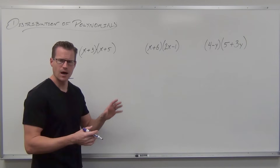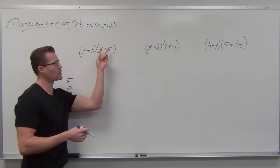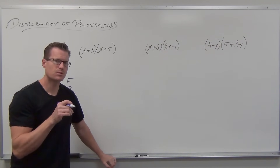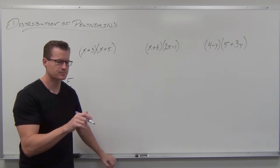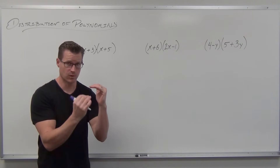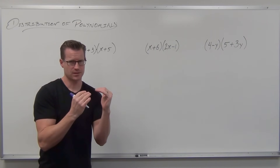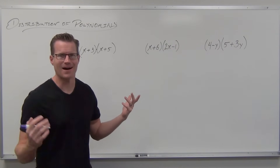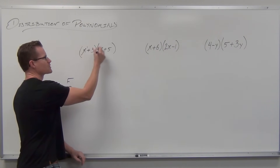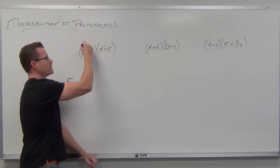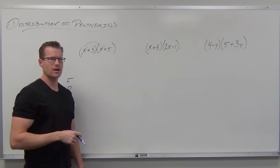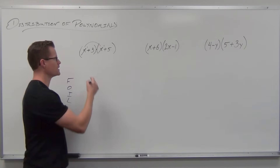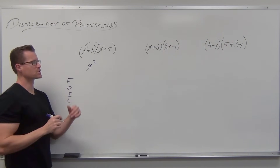The F in FOIL stands for multiplying your first terms together. When we multiply x times x, what do we do with the exponents? Add them — it's always one level below what you see. We're going to get x squared. That's what the First stands for.